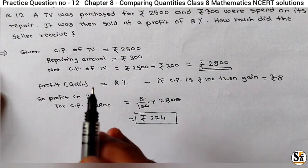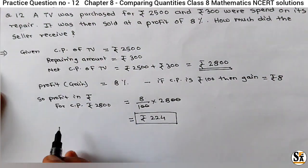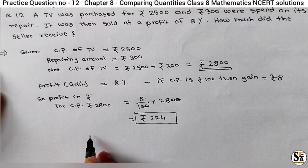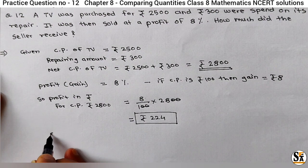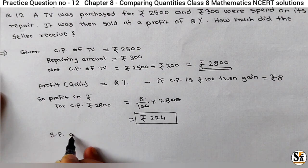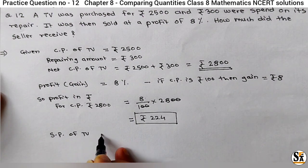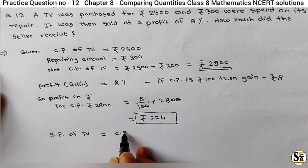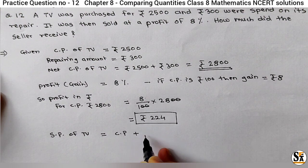Now, how much did the seller receive? Means we have to calculate the selling price of that TV. So selling price of TV is equal to cost price, net cost price, plus profit.